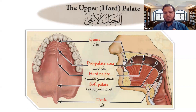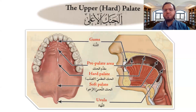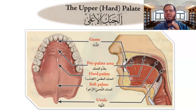How can we understand the hard palate? You can divide it into the nearest part to the teeth — this is called gums. The nearest part to your teeth is called gums. And after the gums, directly, it is called the pre-palate area.